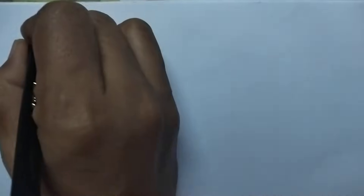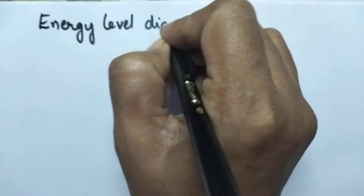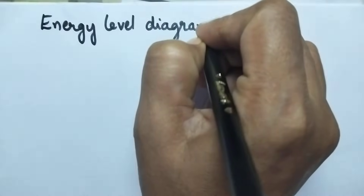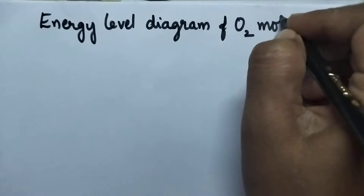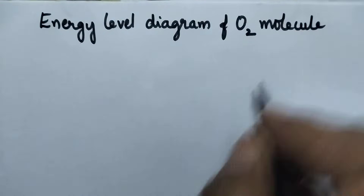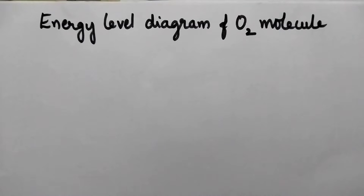Hello students, welcome back to my channel. In this video, I am going to share the energy level diagram of the O2 molecule. It is a good example of a homonuclear diatomic molecule since it consists of only oxygen atoms.